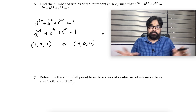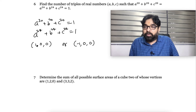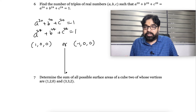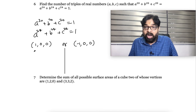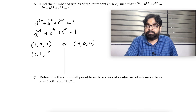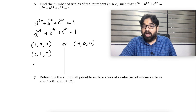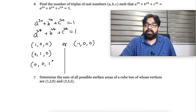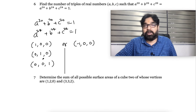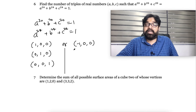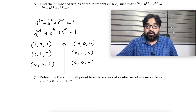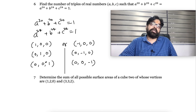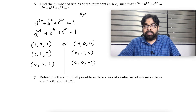They are asking for all possible triplets, so all possible combinations. For the (1, 0, 0) combination: A=1, B=0, C=0; or A=0, B=1, C=0; or A=0, B=0, C=1 — that gives 3 possibilities. Similarly for the (−1, 0, 0) combination: we get A=−1, B=0, C=0; or A=0, B=−1, C=0; or A=0, B=0, C=−1 — that also gives 3 possibilities. So total 6 possibilities. The answer to this question is 6.